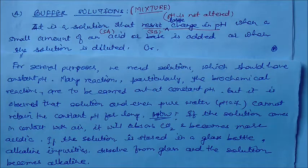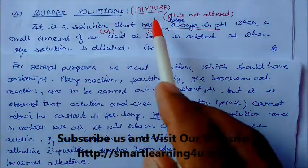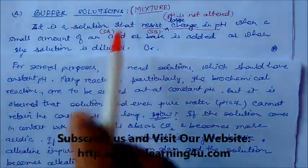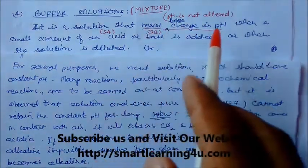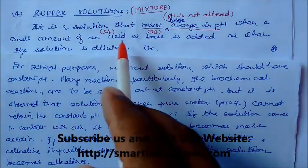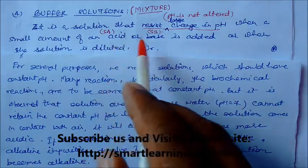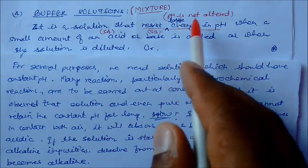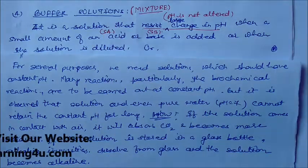Today, in this session we will study about the application of buffer solution. Buffer solution is actually called a mixture — it can be a homogeneous or heterogeneous mixture. Normally in this chapter we study homogeneous mixtures. A buffer solution is one that can resist large changes in pH when a small amount of strong acid or strong base is added, or when the solution is diluted. On adding a strong acid or strong base, there is no change in pH — the value of pH is not altered. That type of solution is called a buffer solution.